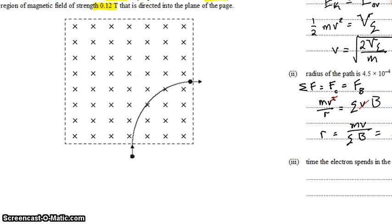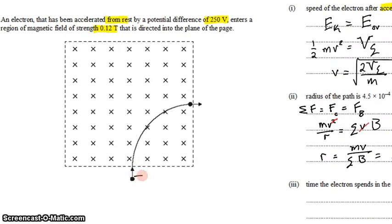This question's not too bad, as long as you recognize that the force on the electron is always perpendicular to its direction. Since the force is never in the direction of motion, the electron is never accelerated to a higher speed. It's only changing direction. So, its speed should be constant throughout this region.